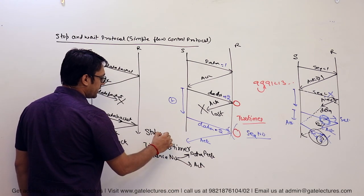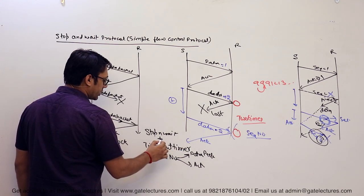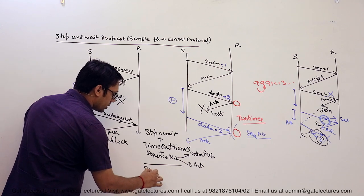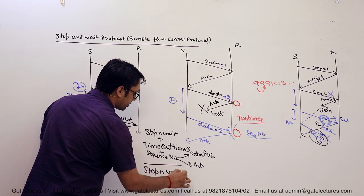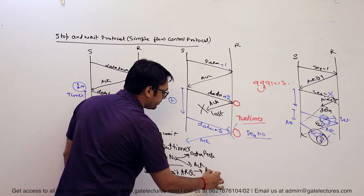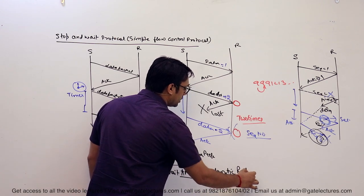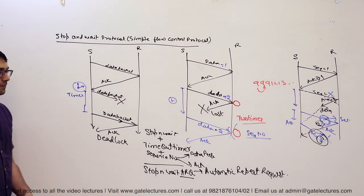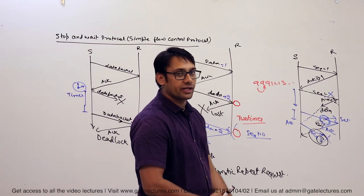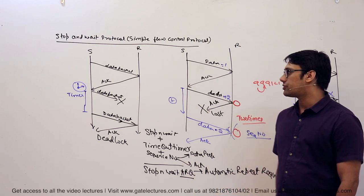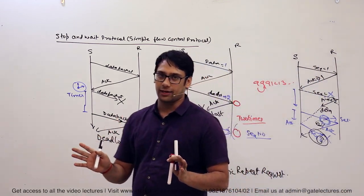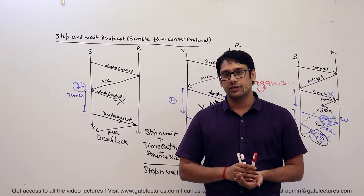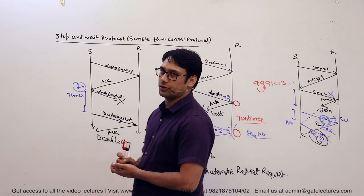So, if you take the stop-and-wait protocol and add a timeout timer plus sequence numbers for both data packets and acknowledgements, you get a new protocol called stop-and-wait ARQ, where ARQ stands for automatic repeat request — meaning if a data packet is lost, it is automatically requested again. Stop-and-wait ARQ is an improvement over stop-and-wait protocol addressing its key shortcomings. In the next video we'll discuss it in more detail and explore related formulas.